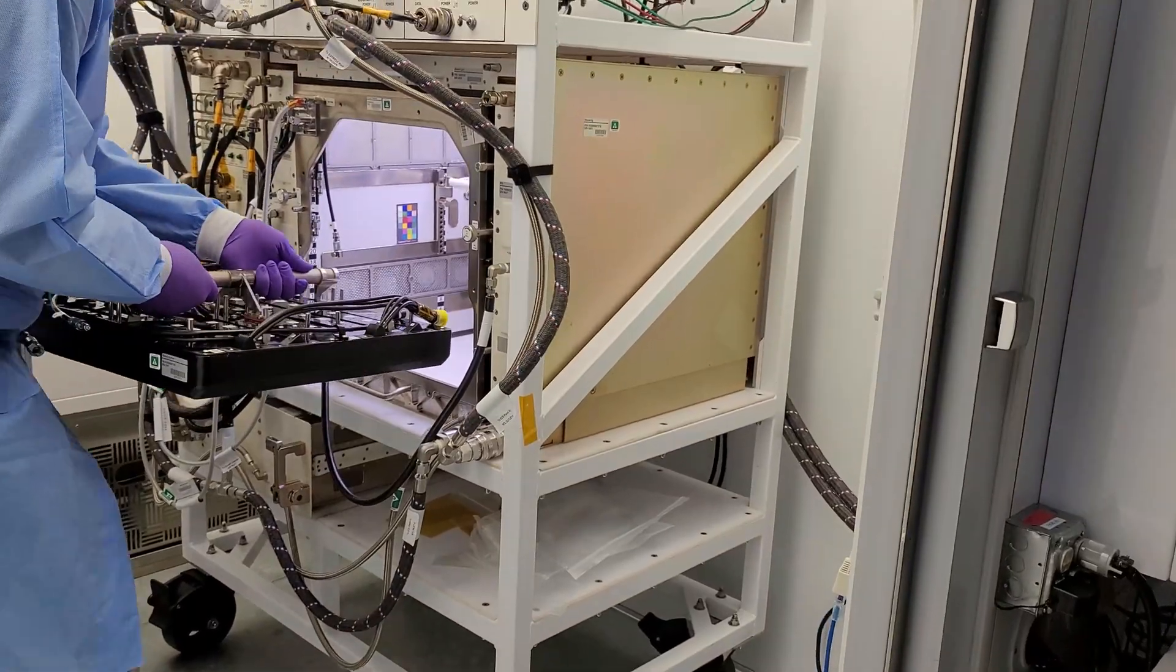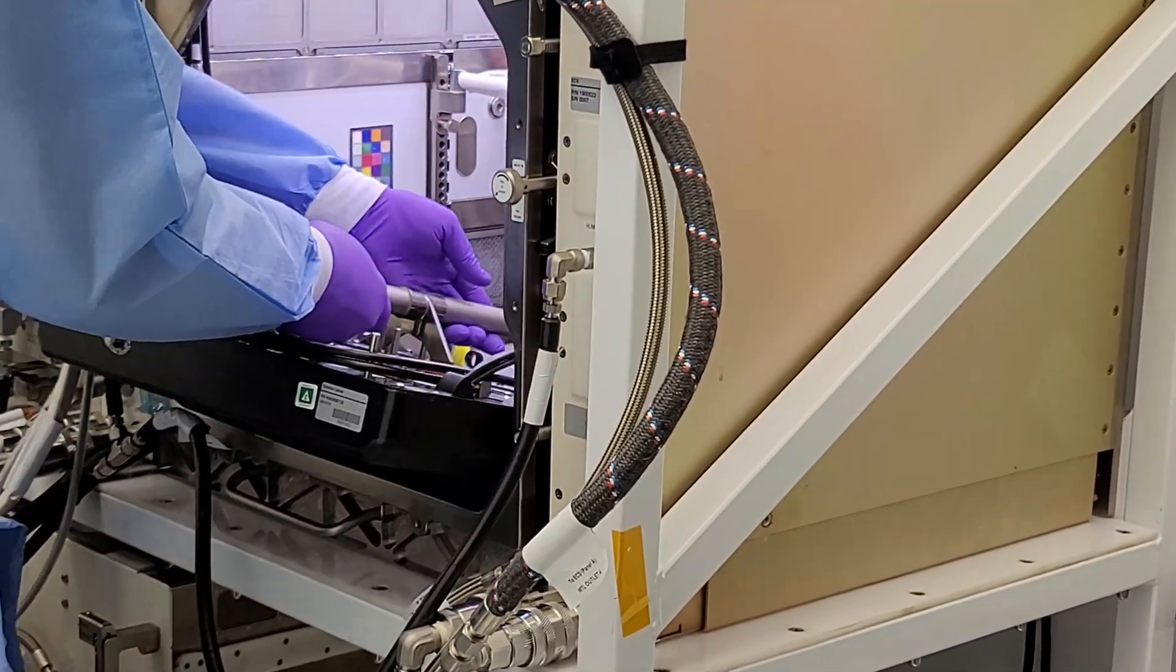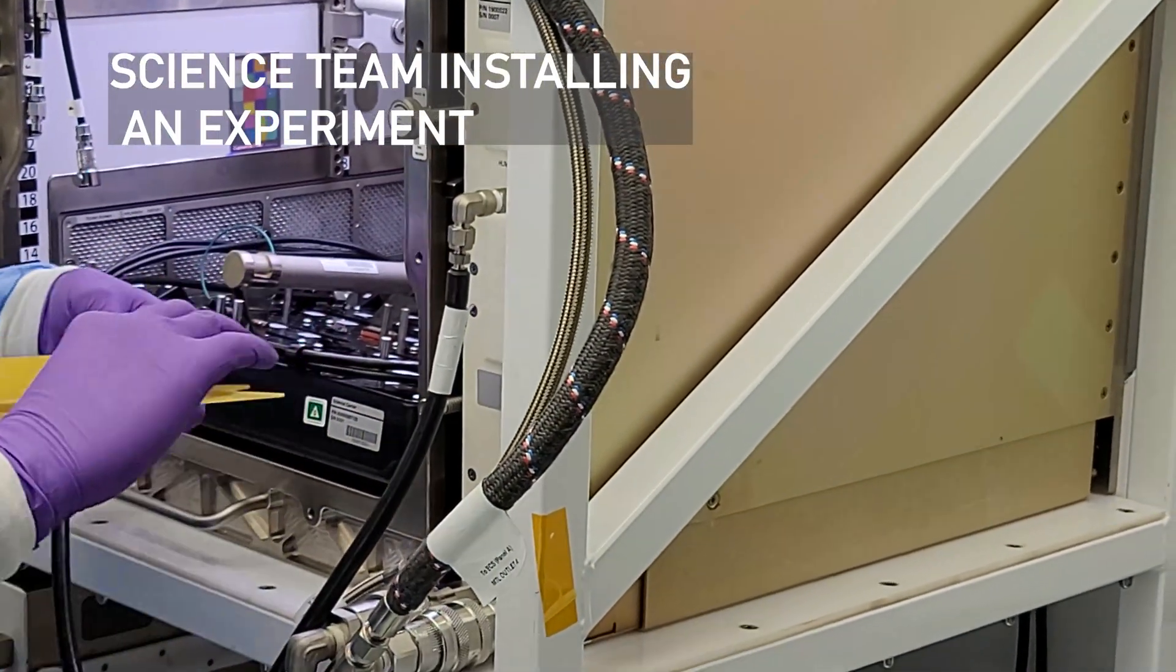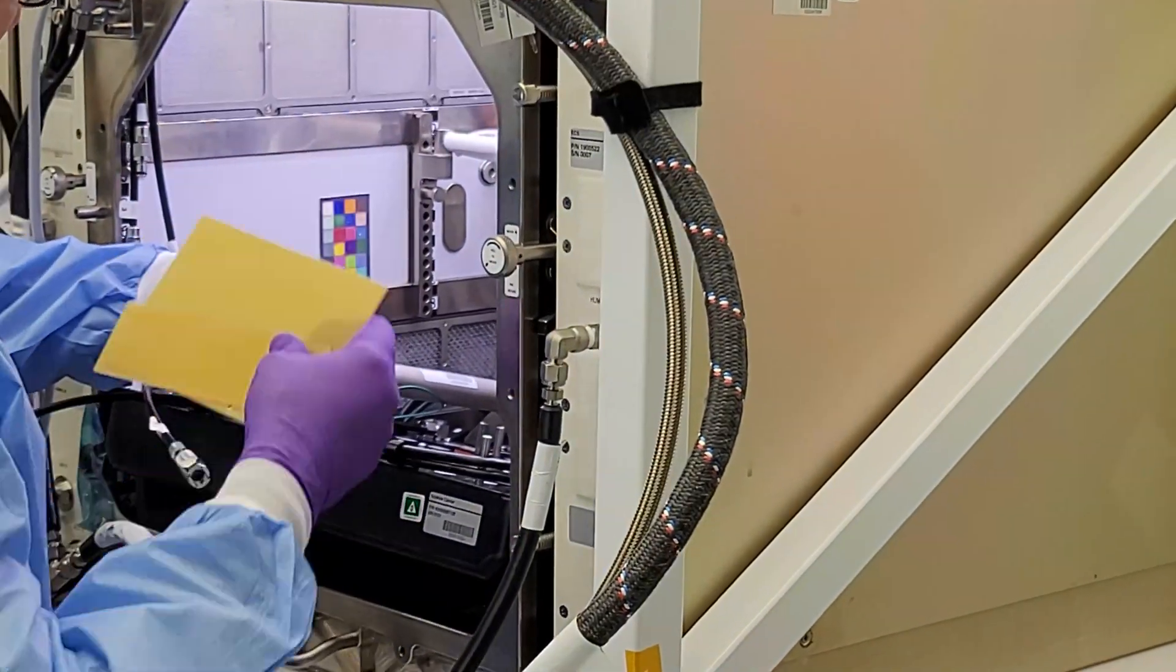So the science team works through everything they'd like to see and what they're trying to figure out and then they provide us with that science carrier that I mentioned before and that tray is then installed into the unit and we try and keep everything very sterile and clean so that no outside factors affect the experiment.